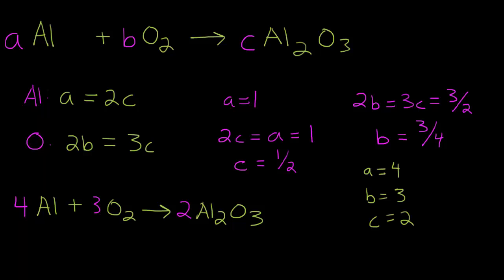And so the last thing we need to do is check our answer to make sure each side is balanced. So on the left side we have 4 Aluminums, and on the right side we have 2 times 2 equals 4 Aluminums, so that's okay. On the left side we have 3 times 2 equals 6 Oxygens, and on the right side we have 3 times 2 equals 6 Oxygens. So our equation is balanced.